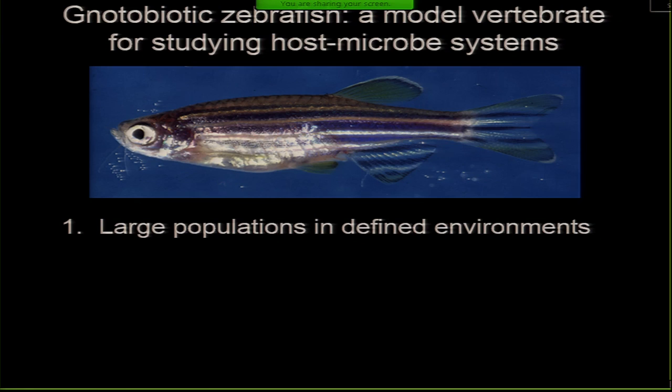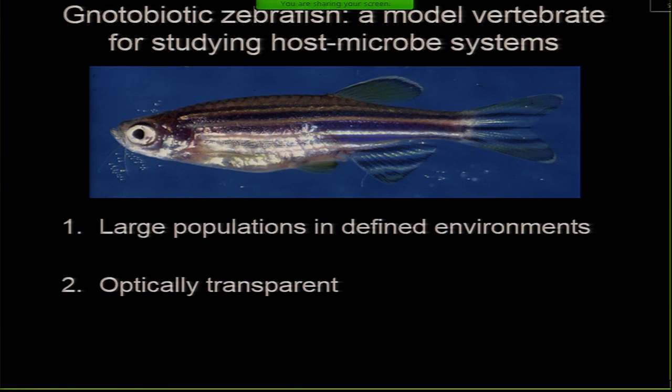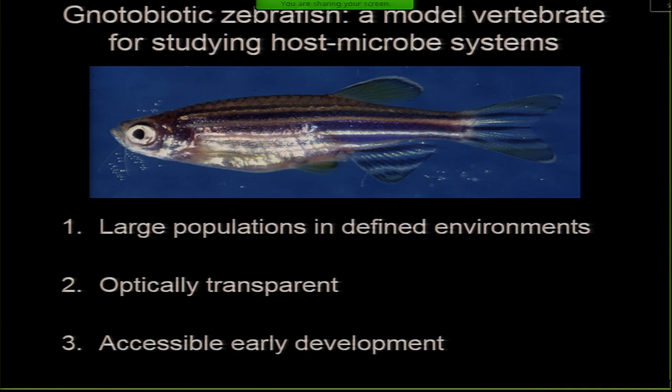One strength of the zebrafish model is that we can work with very large numbers of individuals and control their associations in defined environments, which has allowed us to start asking questions about transmission of microbiota across individuals. Another strength is the optical transparency of the animals, which allows us to look at dynamics of microbial communities in real time inside living organisms. The third is the accessibility to early development — these vertebrates develop ex-utero.